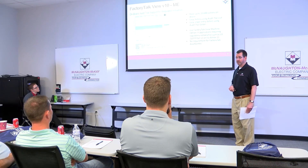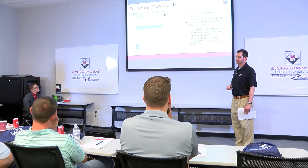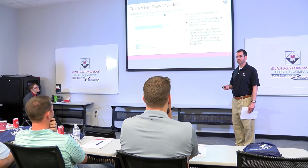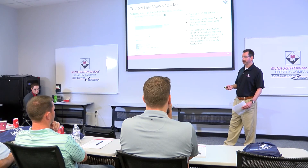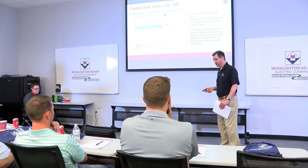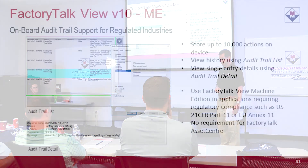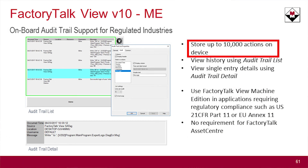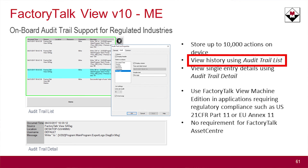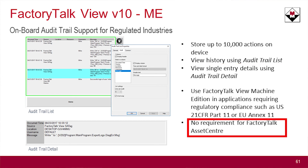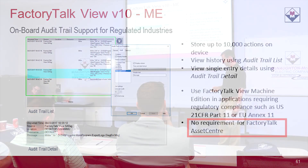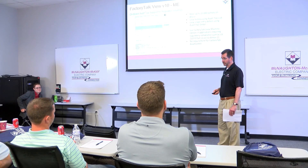Onboard audit information — the PanelView has not previously supported regulated industries requiring regulatory compliance and audit trail information. It now does. It stores up to 10,000 items, with an audit trail list and a detailed drill-down list you can access. It does not require Asset Center — it's all embedded in the terminal itself, so you can now use these terminals in regulated applications.